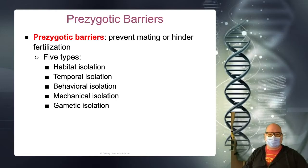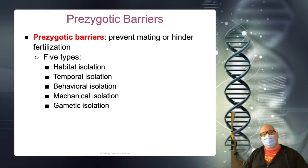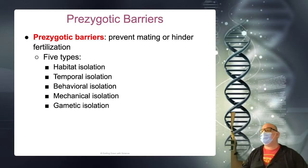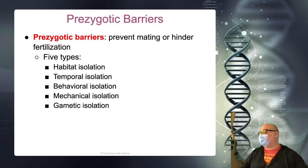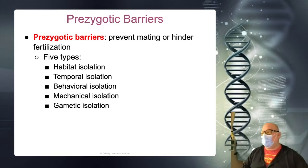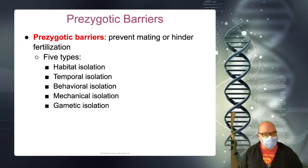Let's talk about those prezygotic barriers. For these prezygotic barriers, this means they don't even get a chance to engage in any kind of sexual act. But don't always think of it as mammal sex — it could be plant pollen as well. Some fish don't really have a sexual act; females lay unfertilized eggs and then males inseminate the eggs outside of her body. There are lots of ways that nature gets reproduction achieved.